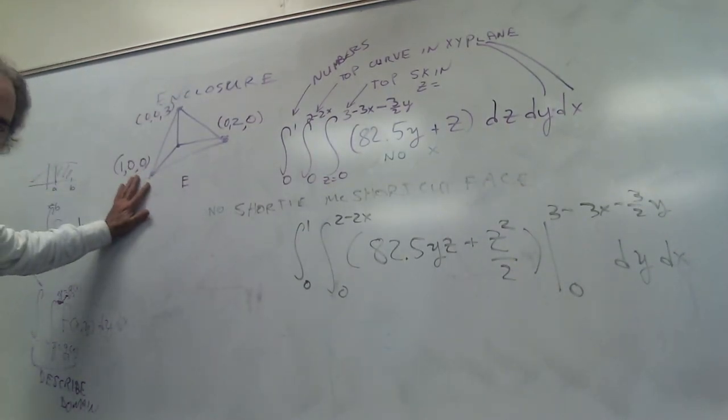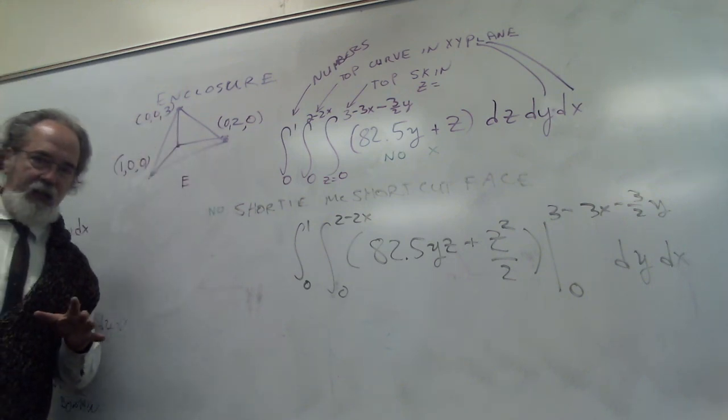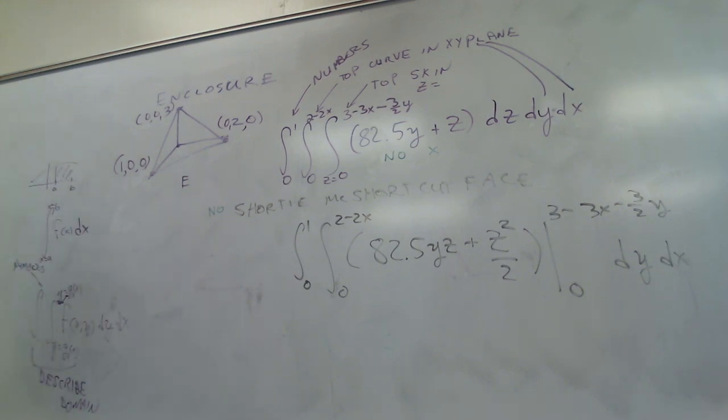Here's the domain, it's a tetrahedron with a right angle at the origin, comes out to 1, 2, and 3. That should feel familiar. We used to do things like this way back at the beginning of the semester.